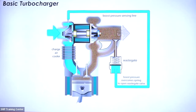Under normal driving conditions, the wastegate valve remains closed and all exhaust gas is sent directly to the turbine housing. As boost pressure rises, pressure acts upon the spring assembly and begins to lift the valve, diverting exhaust flow away from the turbine and controlling turbine speed to regulate boost pressure.